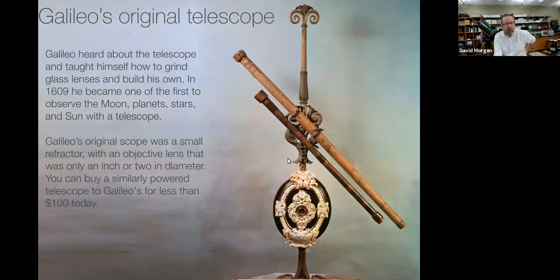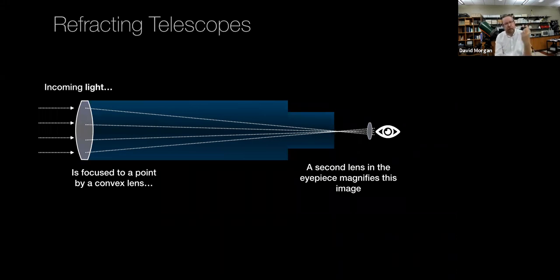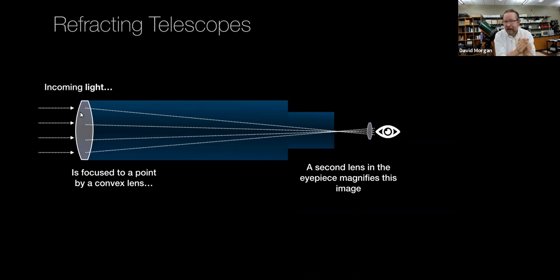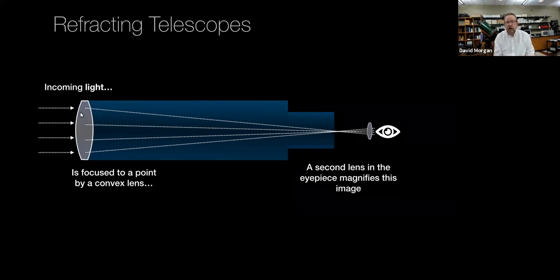You don't need a particularly powerful telescope to see the things that Galileo saw. A refracting telescope uses a lens to focus light and create an image. There is a convex lens — a lens that focuses light like a magnifying glass — at the objective end of the telescope, the part you point at the sky. That focuses the light to a point and creates an image. There's a second lens at the other end if it's built for a person to look through, and that lens magnifies the image. In a typical telescope you can change out the eyepiece lens to change the magnification, which is determined by the ratio of the focal lengths of the two lenses.